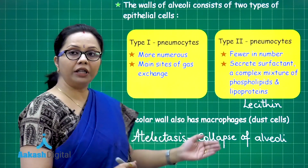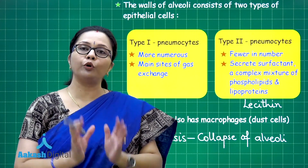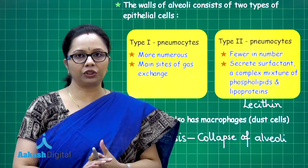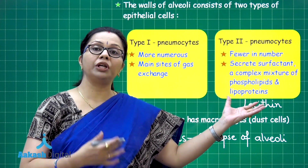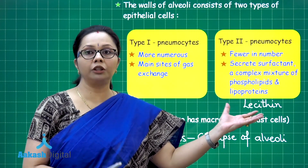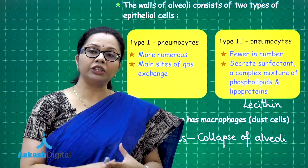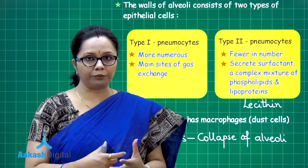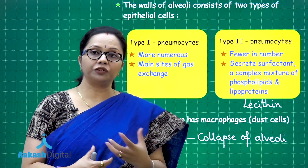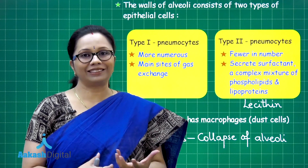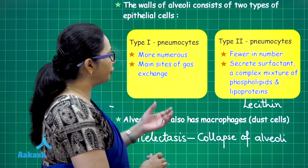To prevent this collapse, the alveolar lining has surfactant mixed into it rather than pure moisture. Surfactant has a detergent-like property, reducing surface tension so that even when we exhale and air pressure inside decreases, the alveoli won't collapse. In smokers, the amount of surfactant secreted becomes lesser, leading to greater chances of collapse.